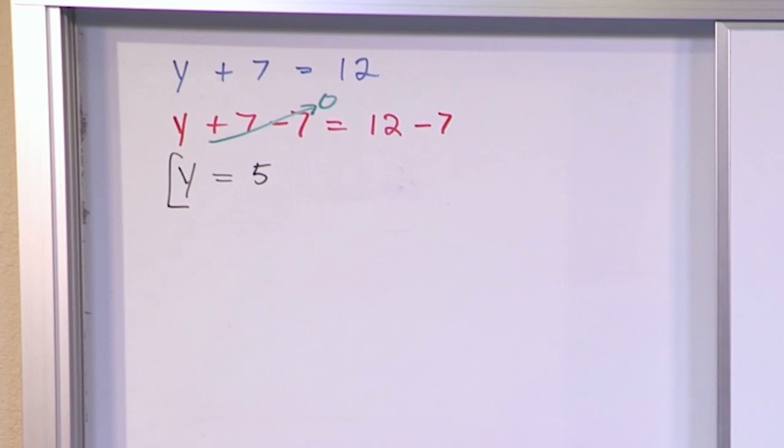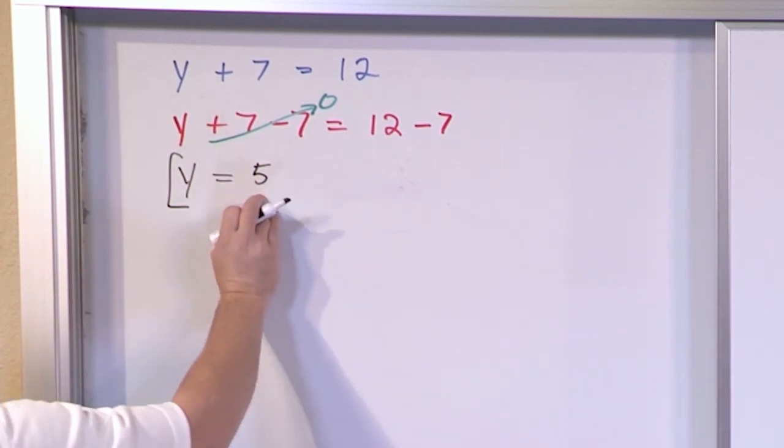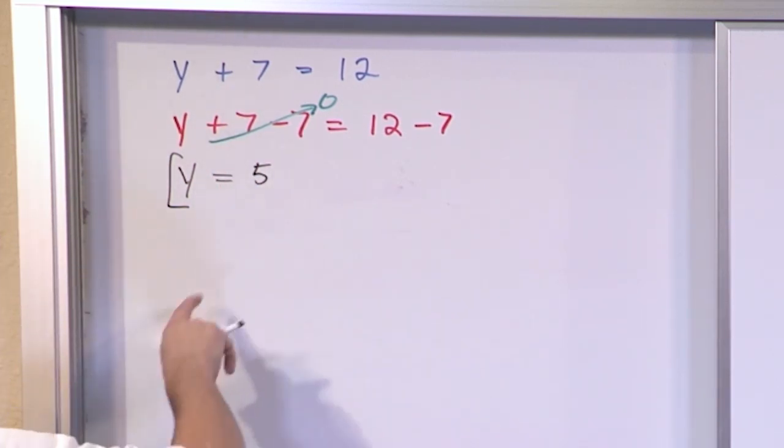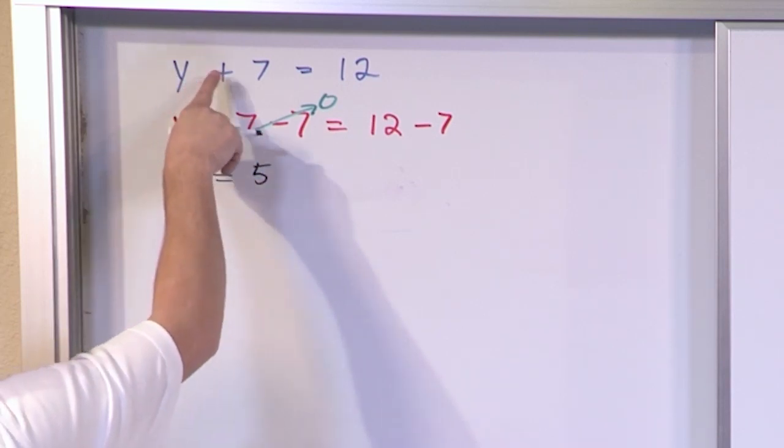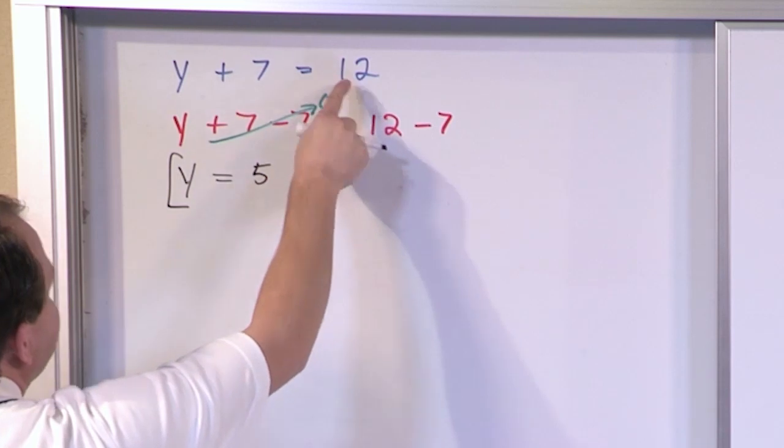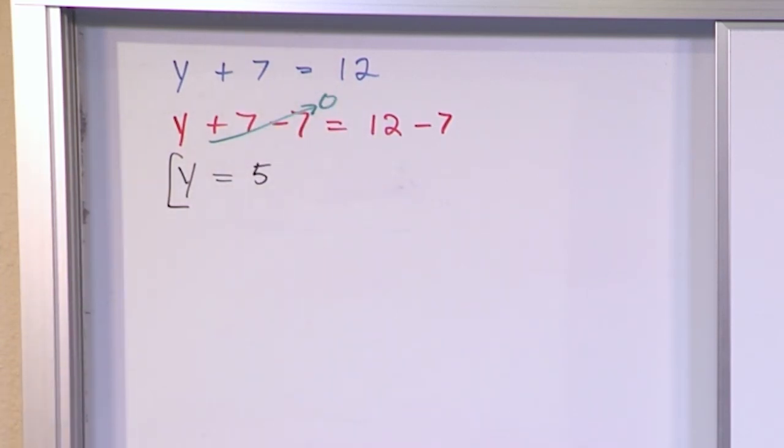So y is equal to 5. Now if you're curious if this is correct, you can always check in algebra. You can take the 5, stick it in here, because y is equal to 5. 5 plus 7 is equal to 12, so it checks out. Everything's correct.